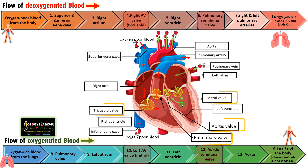To summarize, the four valves are the tricuspid valve and pulmonary valve, which are involved in controlling the movement of oxygen-poor blood, whereas the mitral valve and aortic valve are involved in regulating the flow of oxygenated blood from the lungs.